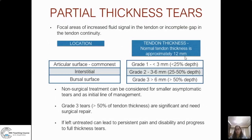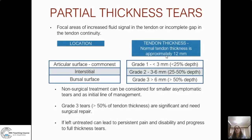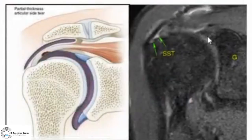The commonest tendon involved is the supraspinatus; however, tears can easily extend into the infraspinatus and subscapularis tendons, and even biceps tendon involvement is known — all of which influence the type of surgery and post-surgical outcomes. Partial thickness tears are seen as focal areas of increased fluid signal intensity in the tendon or an incomplete gap in tendon continuity. Based on location they are classified as articular surface, interstitial, and bursal surface. Based on the involvement of tendon thickness they are graded 1 to 3: grade 1 is less than 25%, grade 2 is less than 50%, and grade 3 is more than 50% thickness involvement.